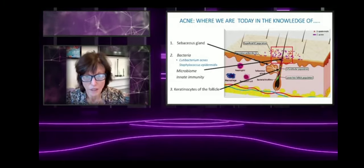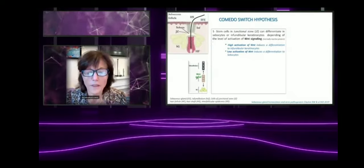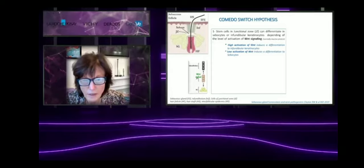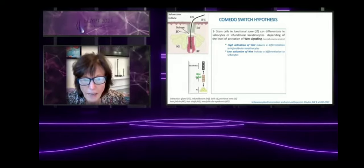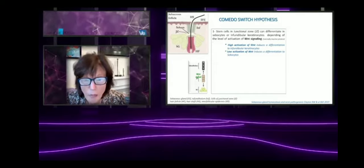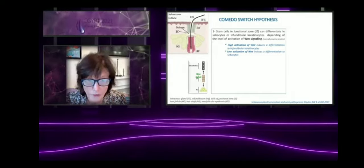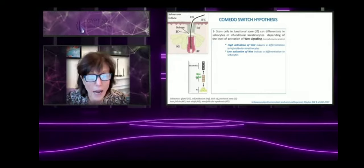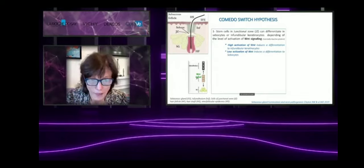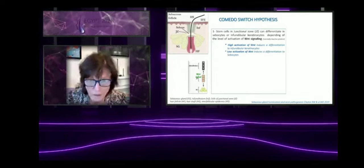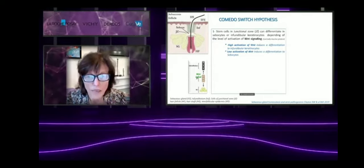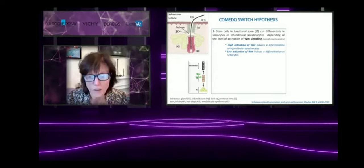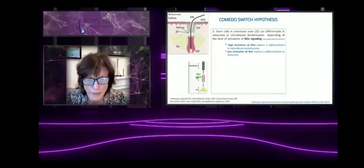Concerning these three factors, the first one is the sebaceous gland, which is really of great interest. It has been identified that you have stem cells here at the junctional zone, and they are able to differentiate either in sebaceous gland or in keratinocytes, depending on the Wnt signal. If you have high activation of Wnt signal, you induce differentiation in keratinocytes. If you have low activation, it will induce stem cell differentiation to sebaceous gland.